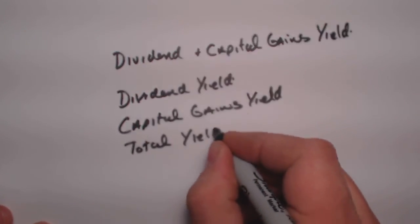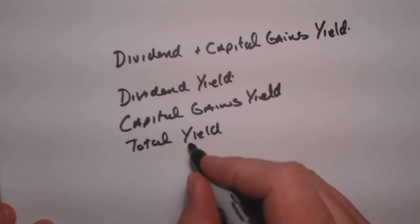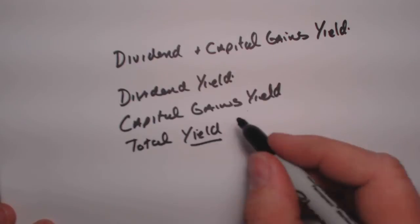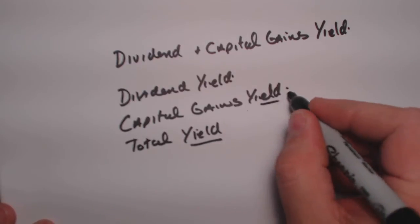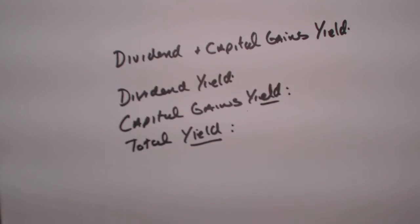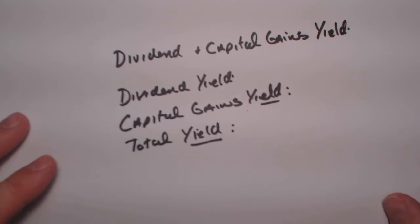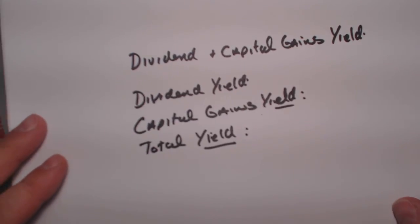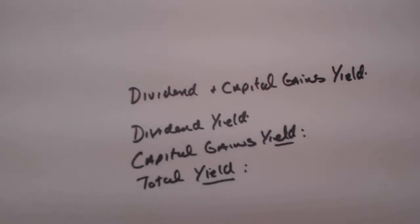Now when we look at yields, the word yield means we are going to be looking for a percentage. So we're going to be looking for a percentage with a capital gains yield, the dividend yield, and the total yield within a particular problem. So let's get started.